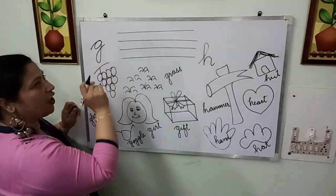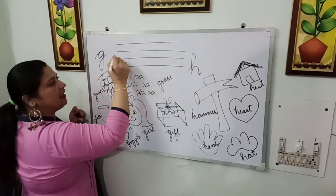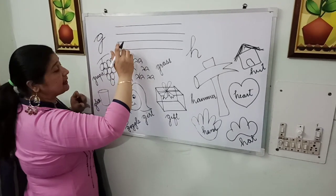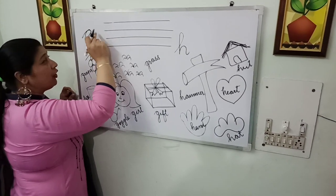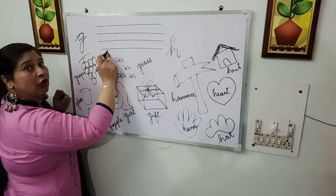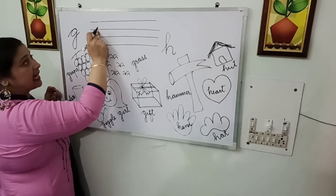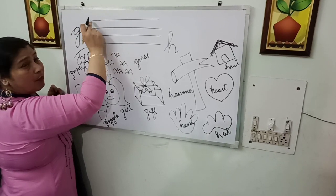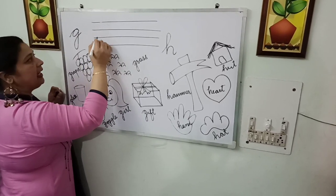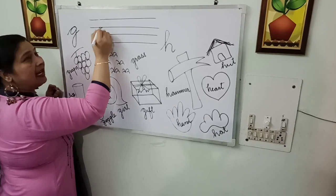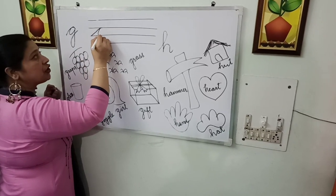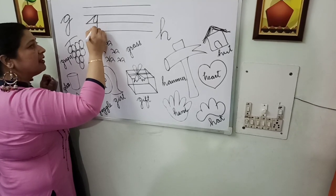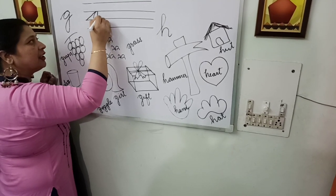First of all we will write 'guh'. For writing 'g', again we have to write in 4 lines — we have to use 4-line copies. For writing 'g' you have to use the 2nd, 3rd, and 4th line. Remember, 2nd, 3rd, and 4th line — we write in between these. The topmost line we are not going to use. So for writing 'g', make a slanting line in the shape of a 9 — a slanting 9. Then from there the curve goes up.